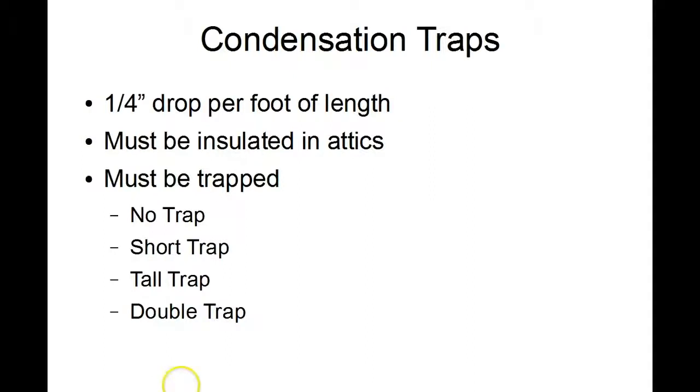Some things you need to know, and this is in most manufacturer's installation guidelines, is you need a quarter inch of drop per foot of length of condensation pipe. So if you have 40 feet of condensation drain line, you need a 10 inch drop from the outlet to the drain. That's something to keep in mind when you're routing drain lines, especially through the attic in a home where you don't have a lot of drop or if it's in a crawl space.